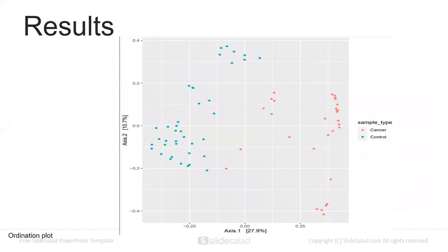The ordination plot shows that the control datasets are divided into three explicit groups, whereas the cancerous datasets also have a few outliers but are divided into three specific explicit groups as well.